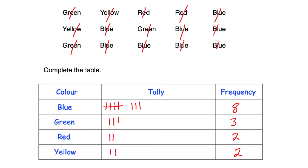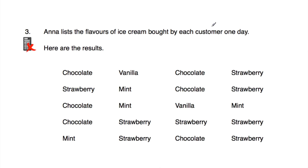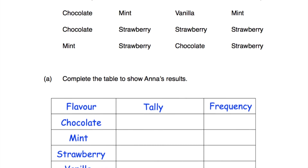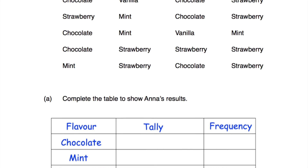Question number three. Anna lists the flavours of ice cream bought by each customer one day. Here are the results — the flavours include chocolate, vanilla, strawberry, and mint. There are four answers in each row and five rows, so five times four is 20, meaning there are 20 answers altogether. The question says to complete the table to show Anna's results, so we need to complete the tally chart.